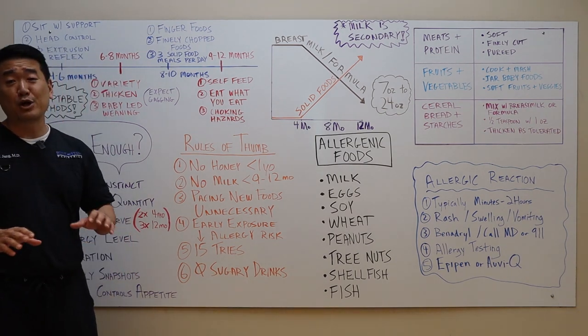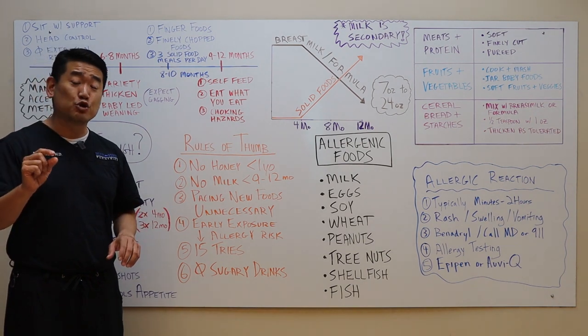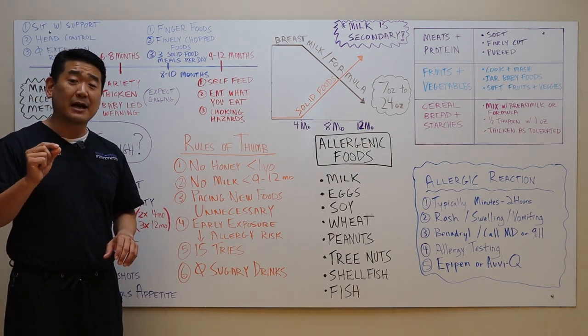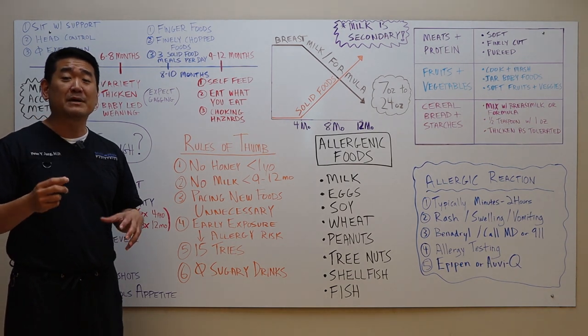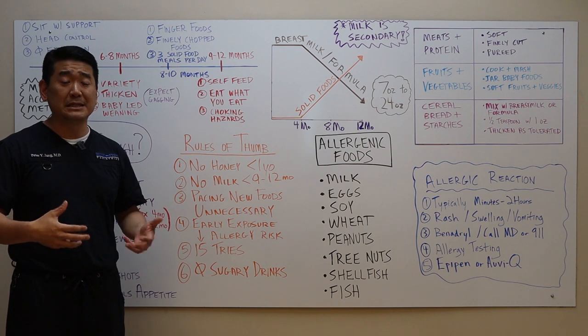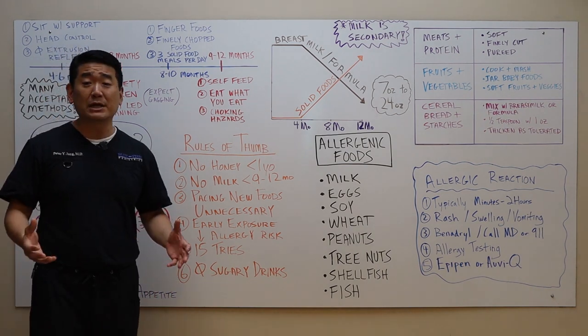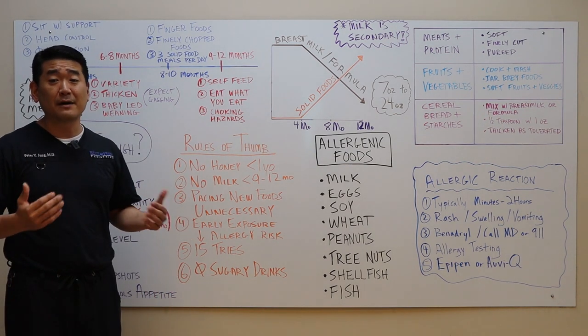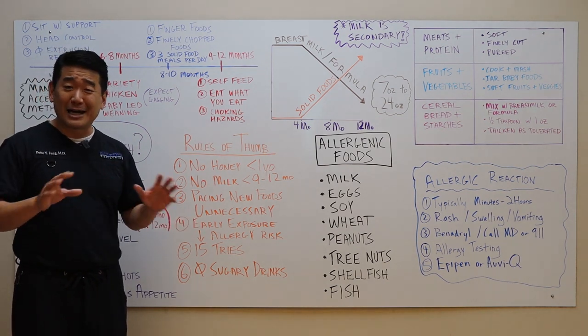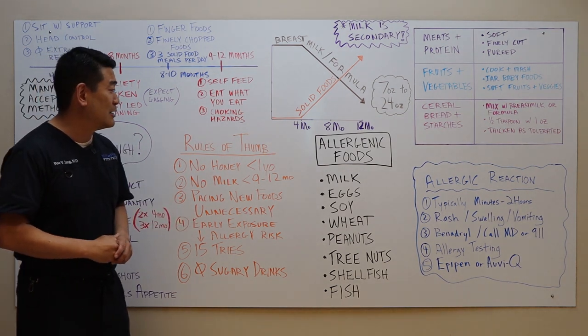Number six, very important, no sugary drinks. Even fruit juices are not healthy for kids. You do not want to get them stuck on sugary drinks early in life because that's an easy way for them to consume a lot of calories, which can lead to obesity. Rather than give them fruit drinks, it's much healthier to give them cut up fruit and avoid the sodas, avoid the Starbucks, avoid the Sonic drinks. Try to avoid those sugary drinks early in life.